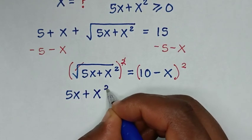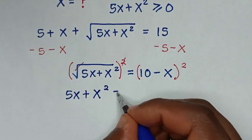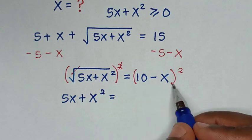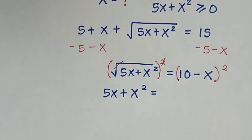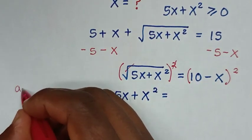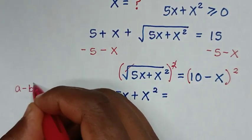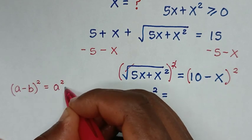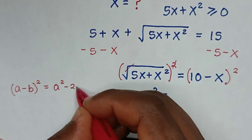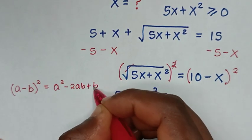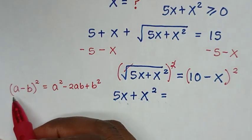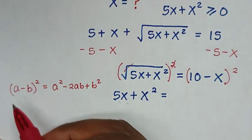which is equal to (10 minus x) squared. This is in the form of (a minus b) squared, which equals a squared minus 2ab plus b squared.